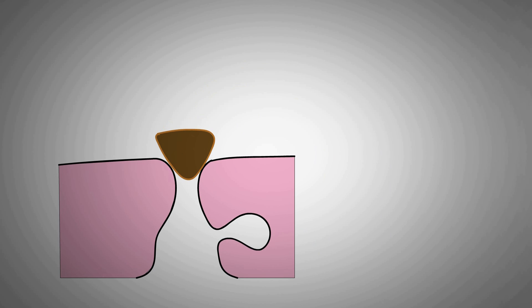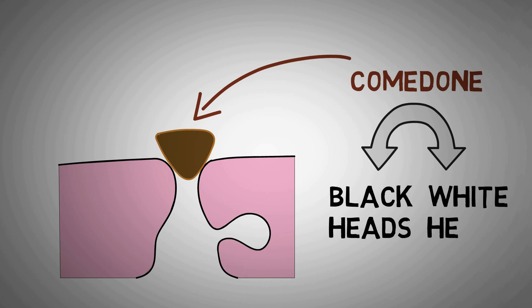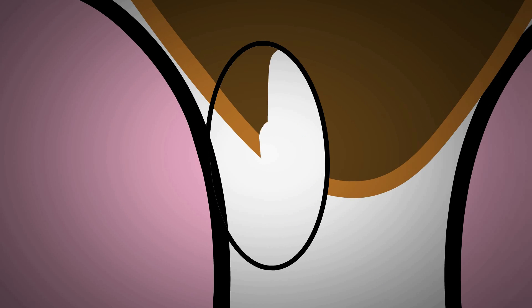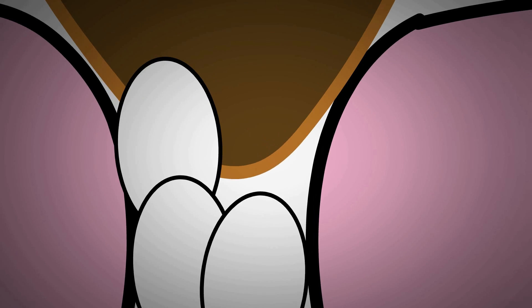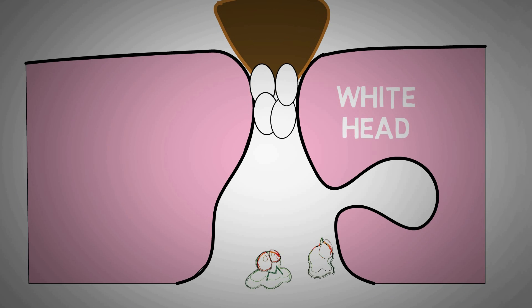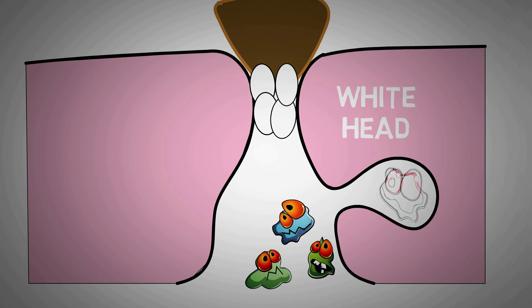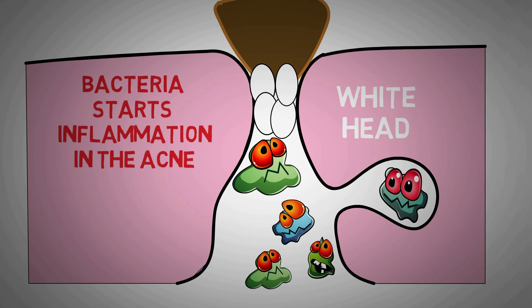When glands produce too much oil, the pores can become blocked and dirt, bacteria, and cells build up. The blockage is called a plug or a comedone. If the top of the plug is white it is called a whitehead; if the top is dark it is called a blackhead. The black color is due to a keratin plug fixed on the pore, while a whitehead is due to a small collection of pus in the follicle opening. Once the plug occurs, Propionibacterium acnes starts to grow in the follicle, setting off a cascade of inflammation, and the plug becomes red and bigger, ultimately turning into a pimple.